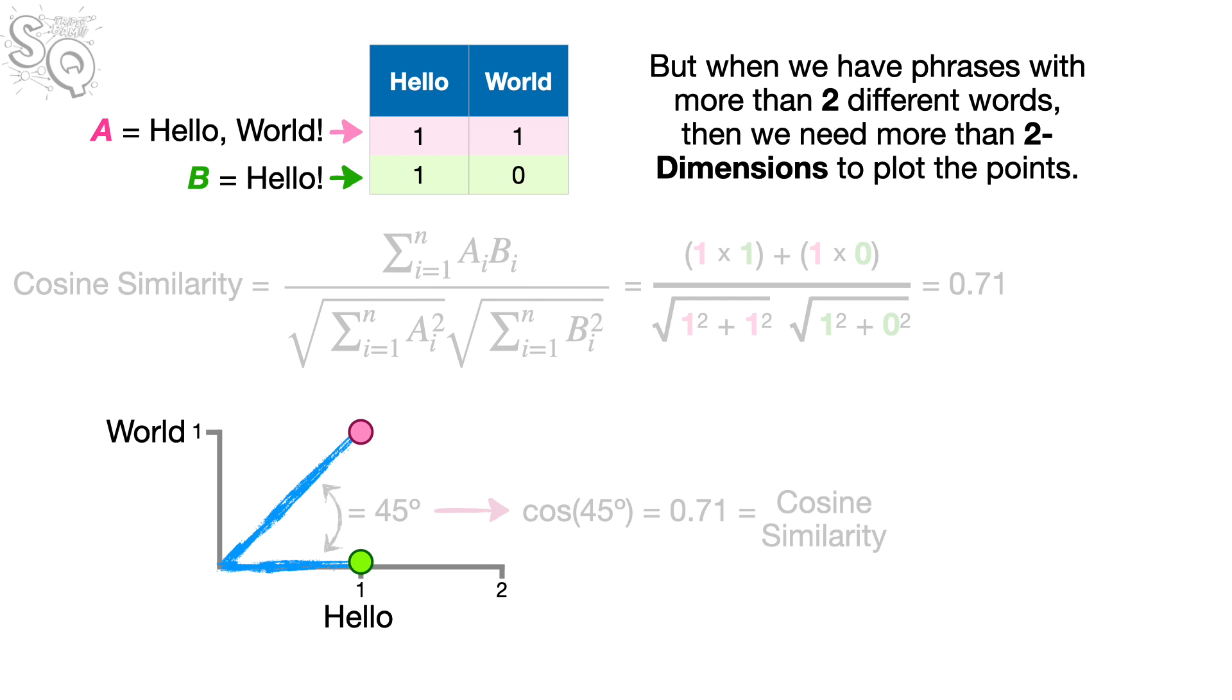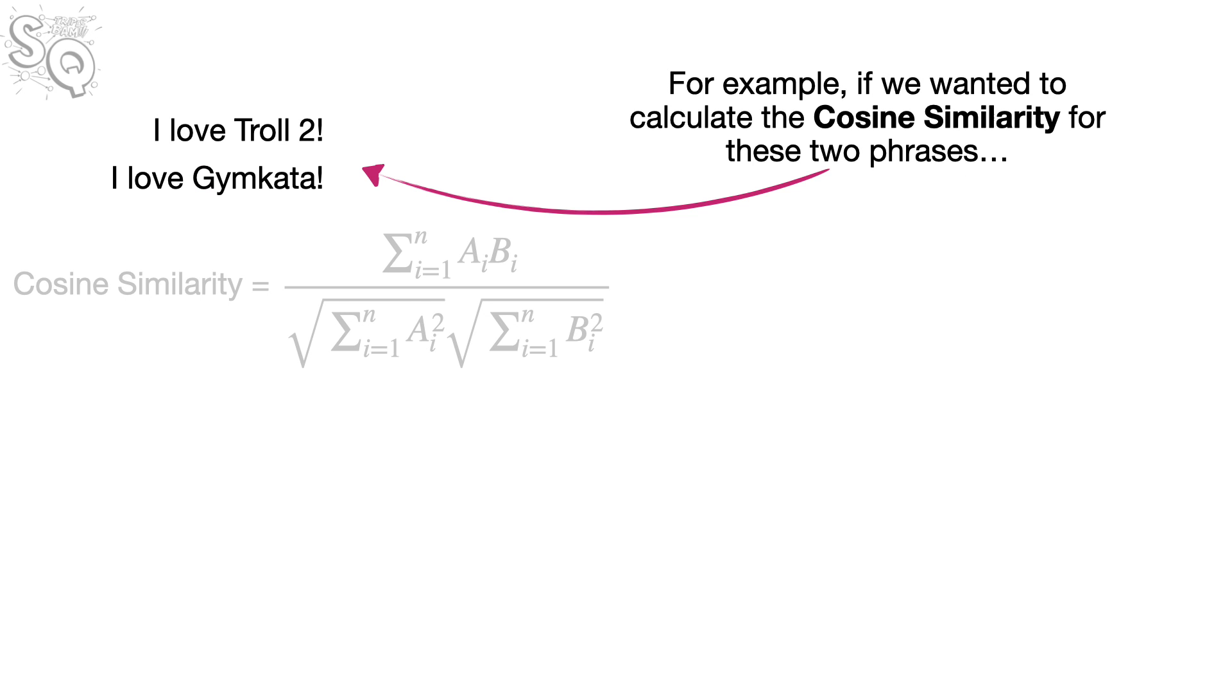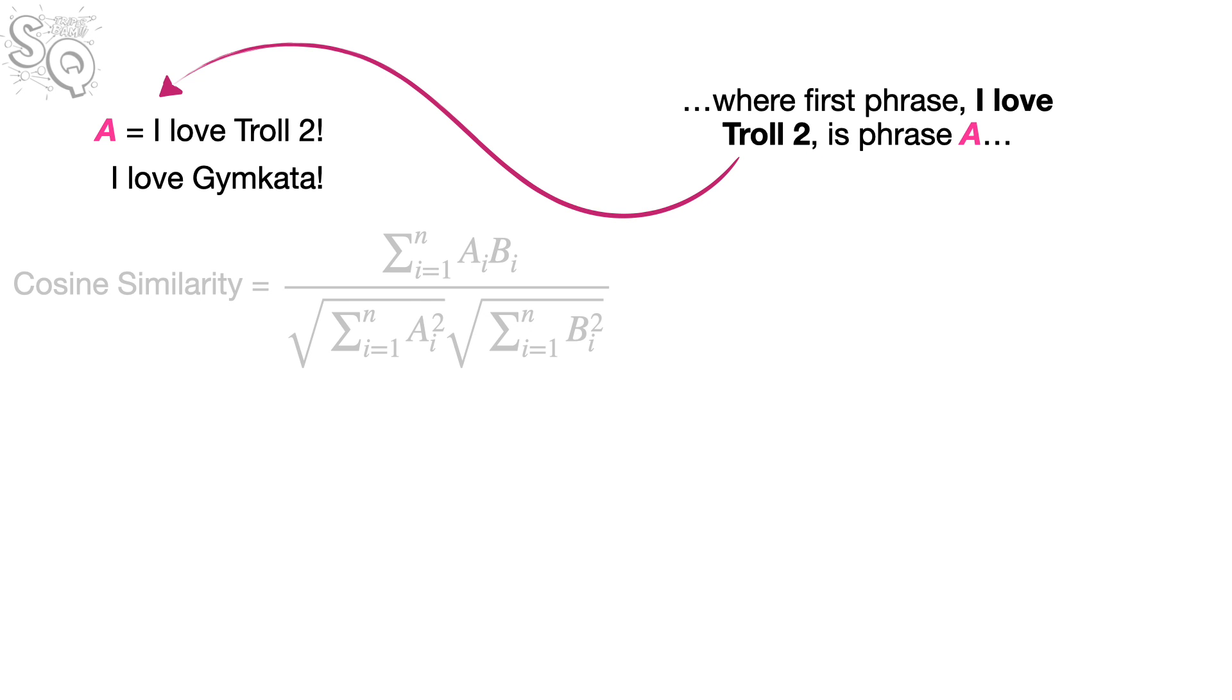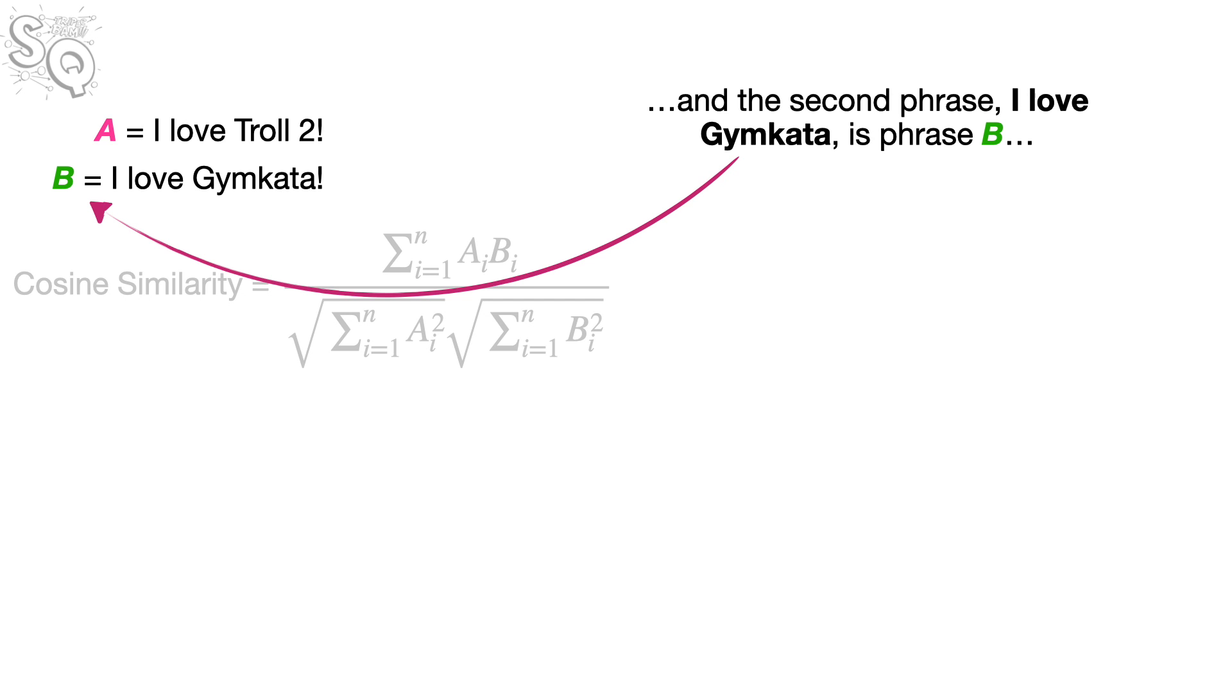But when we have phrases with more than two different words, then we need more than two dimensions to plot the points. For example, if we wanted to calculate the cosine similarity for these two phrases, where the first phrase, I love troll too, is phrase A, and the second phrase, I love Jim Cotta, is phrase B,